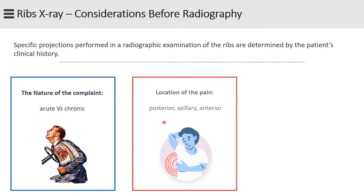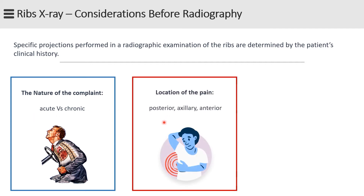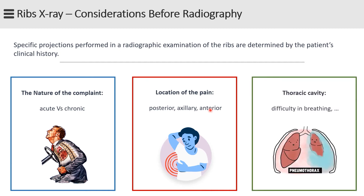Second, the location of the pain or injury, which is the main item that must be considered by technologists to choose the right position and projection. Third, does the patient have difficulty in breathing? This will help you understand whether the injury may have been caused by trauma to the thoracic cavity.